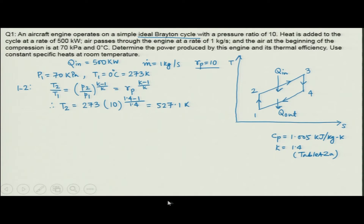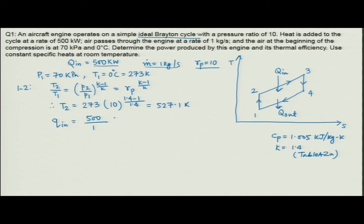Now we need to find T_3. Q_in is 500 kW and m_dot is 1 kg/s, so the heat addition per unit mass is 500 kW / 1 kg/s = 500 kJ/kg. That is the amount of heat added.